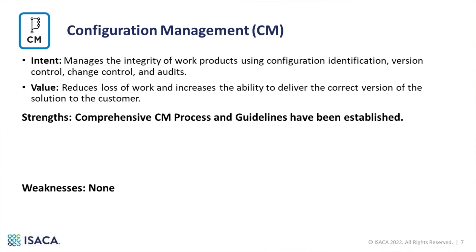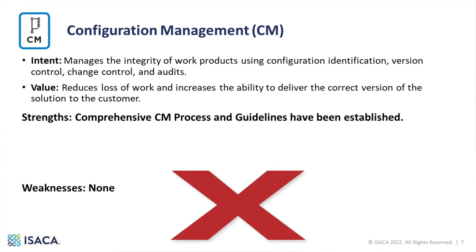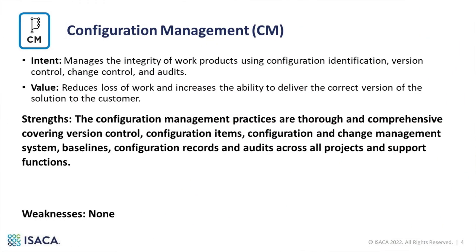Here's another example: comprehensive CM process and guidelines have been established. This is a bad strength as written because the finding statement gives no details about why it is comprehensive. A better finding might be: the configuration management practices are thorough and comprehensive, covering version control, configuration items, configuration and change management system, baselines, configuration records, and audits across all projects and support functions. This example provides details on how the configuration management process is comprehensive and goes above and beyond what the model says.